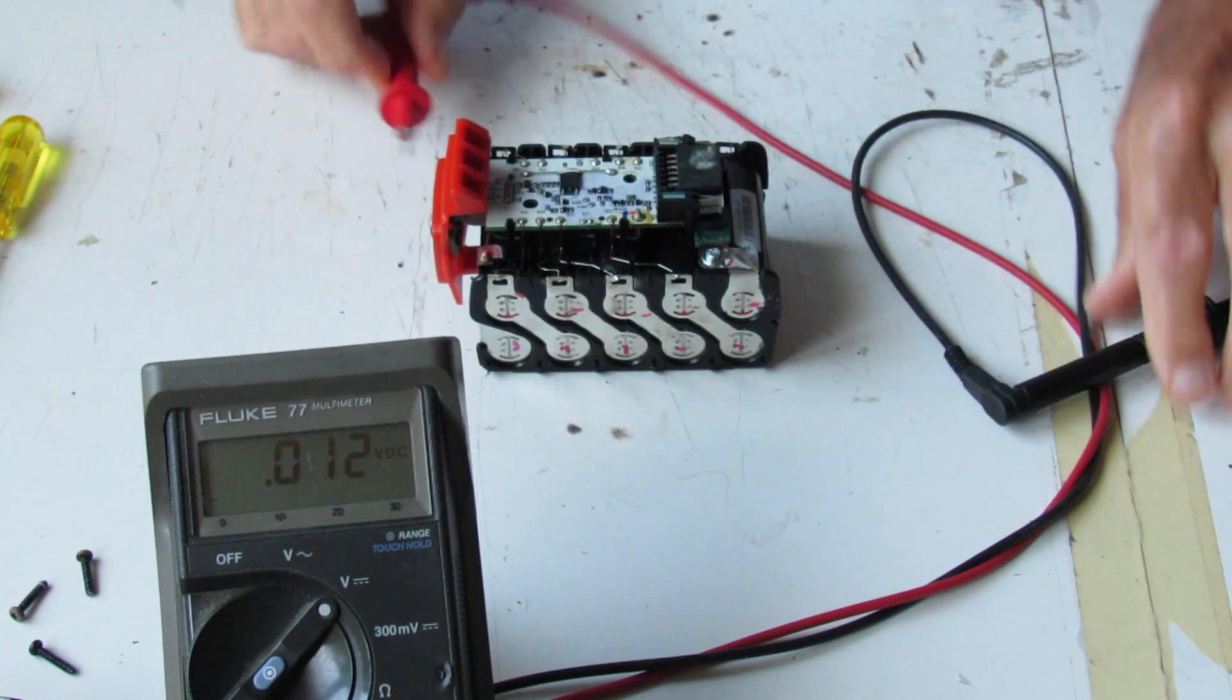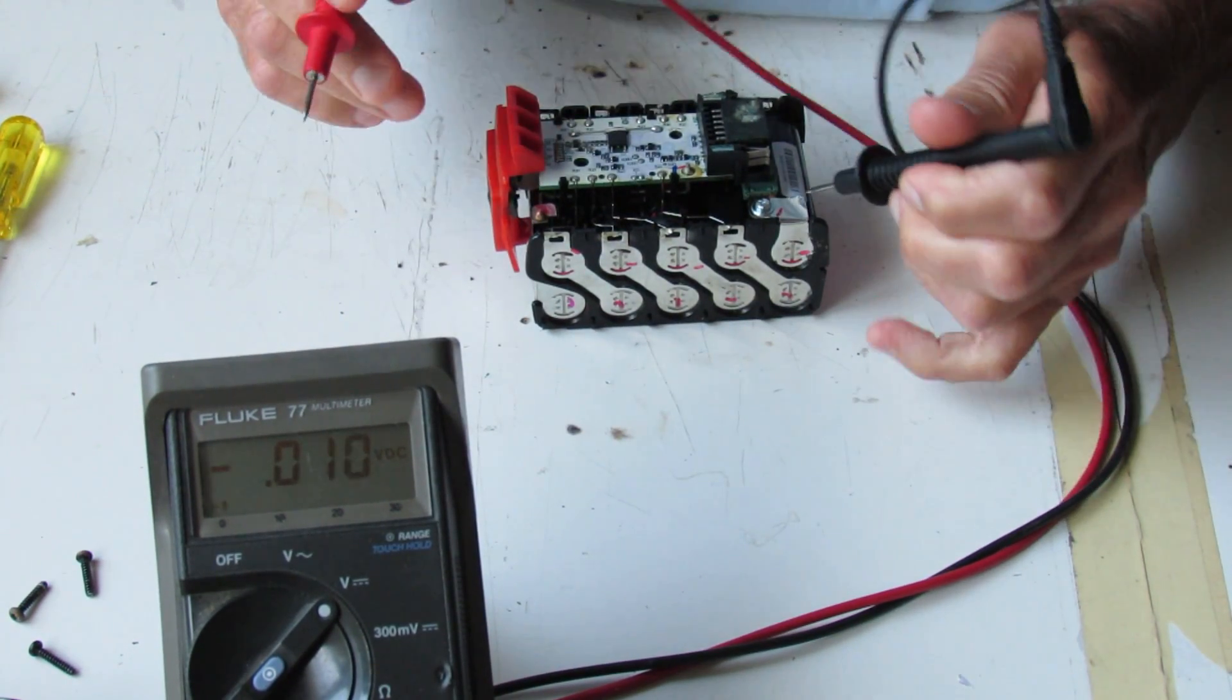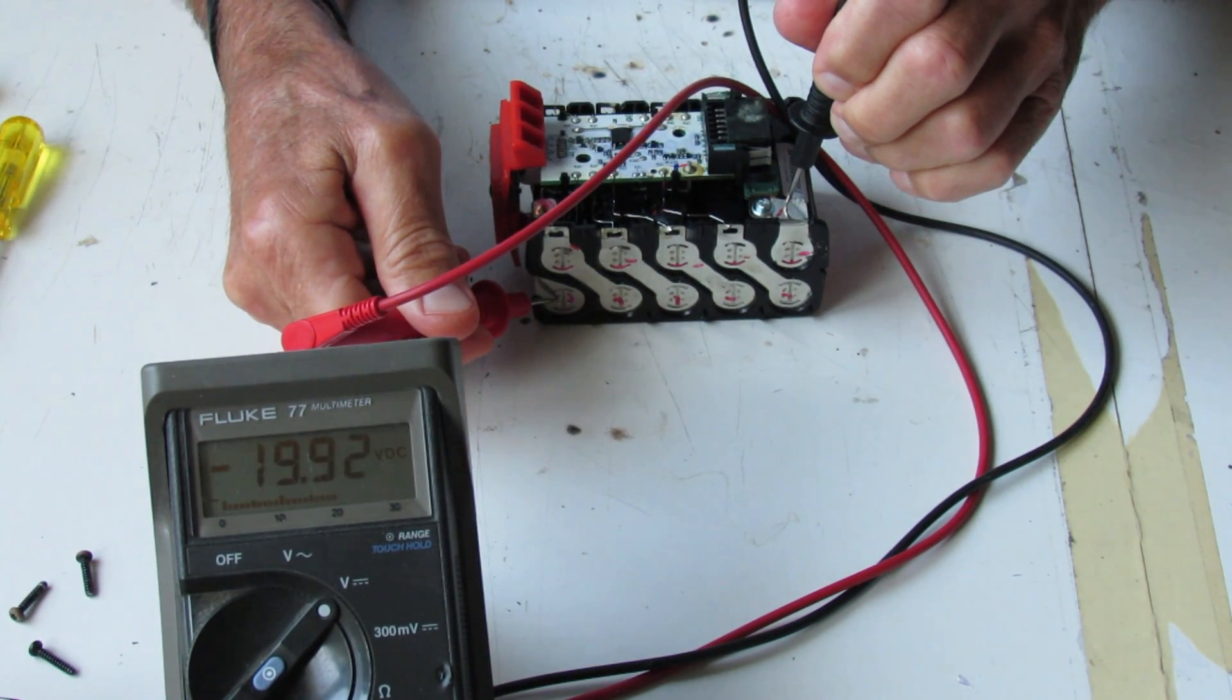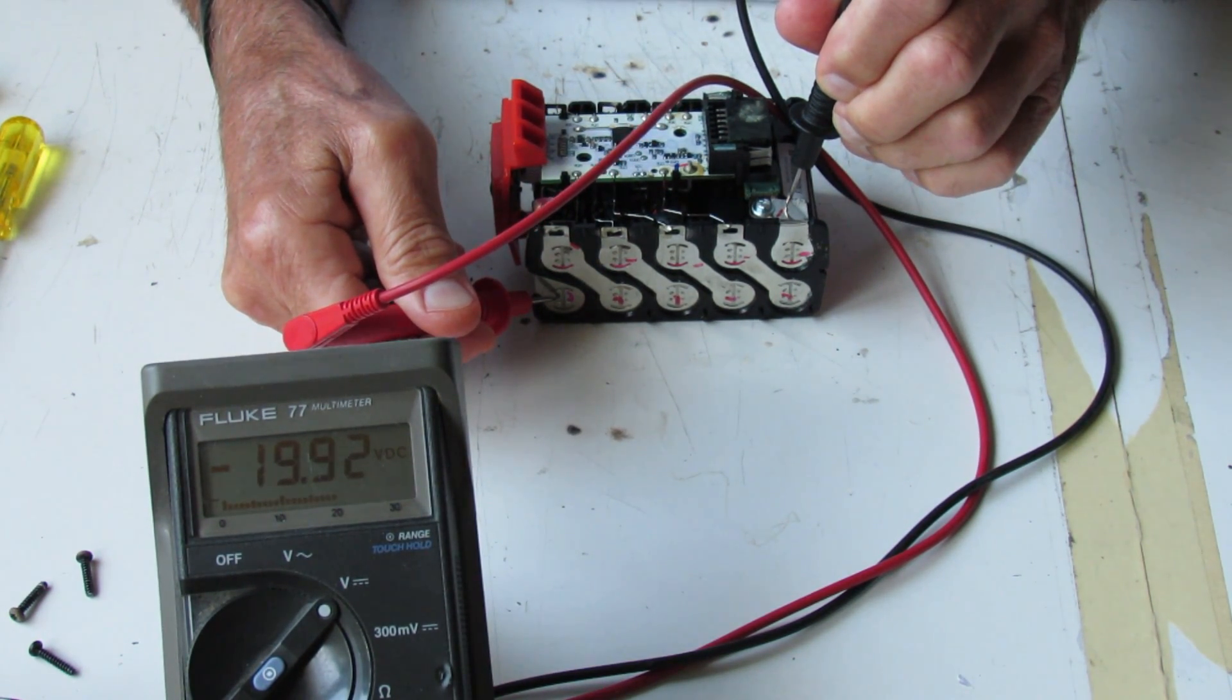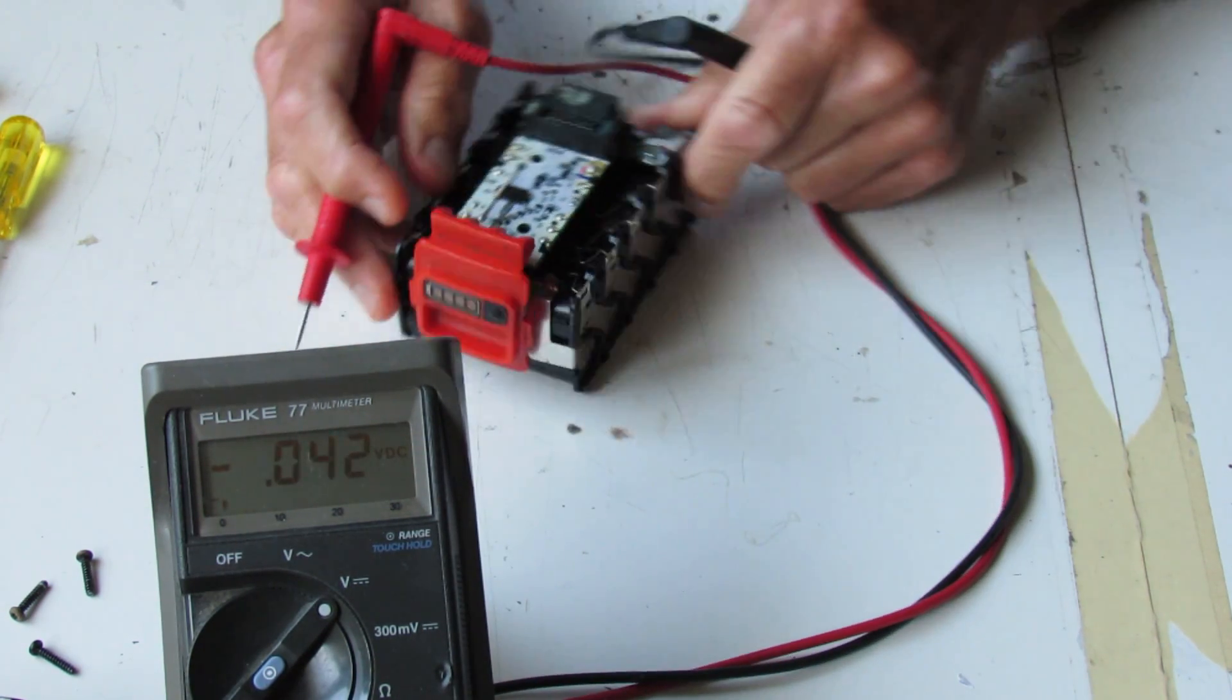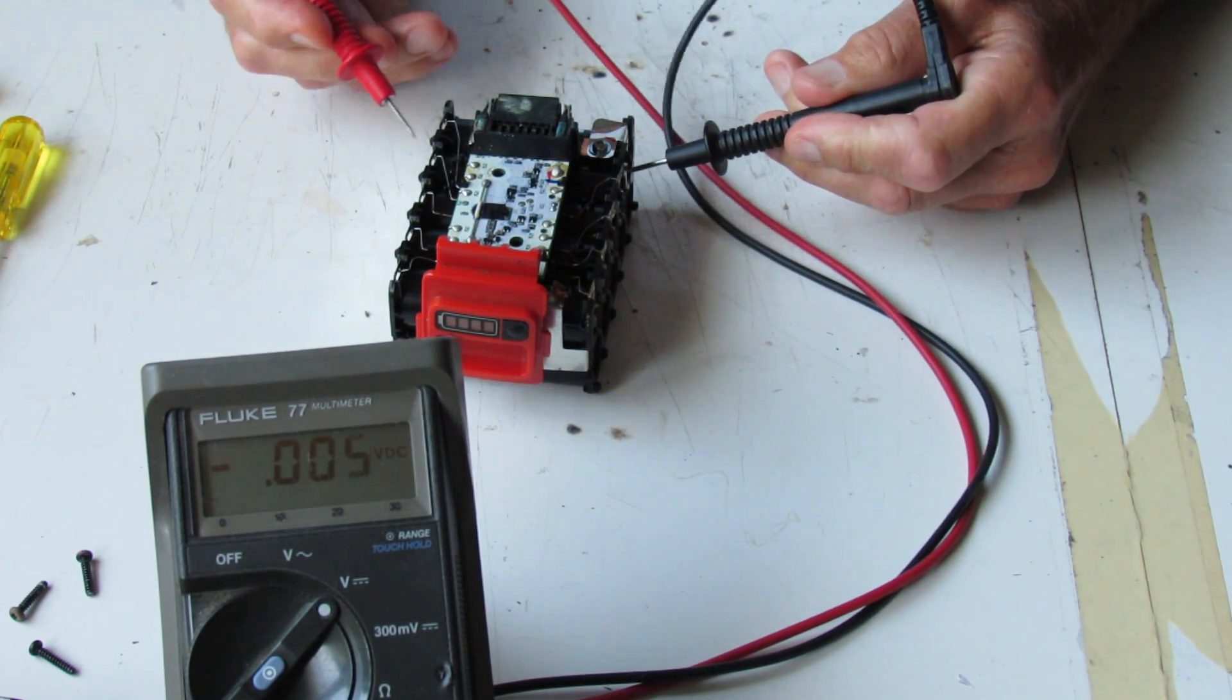So between those two terminals I should read approximately 36 volts nominal. As you can see, it's only about 20 volts, which indicates to me out of the 10 cells, it looks like there's only about five that are functional.